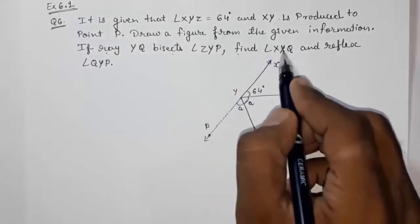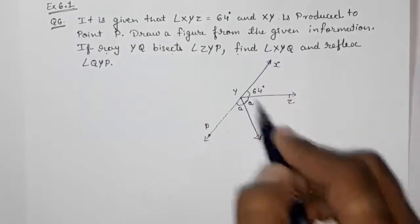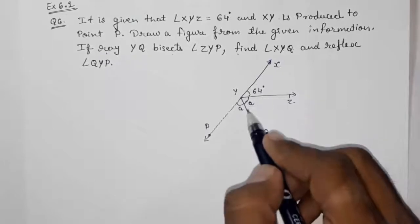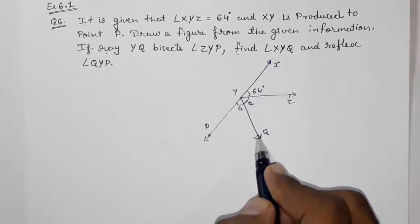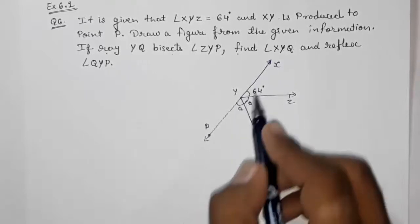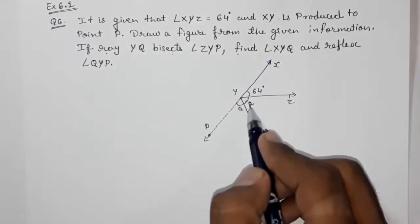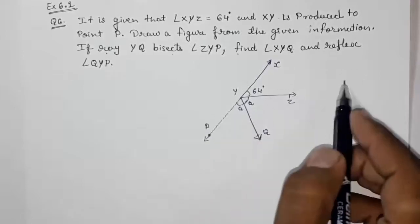Now find angle XYQ. XYQ means this whole angle we have to find out, and then reflex of angle QYP. Reflex of QYP. So for that first we have to find out this A and then and only then we can find out the other angle.